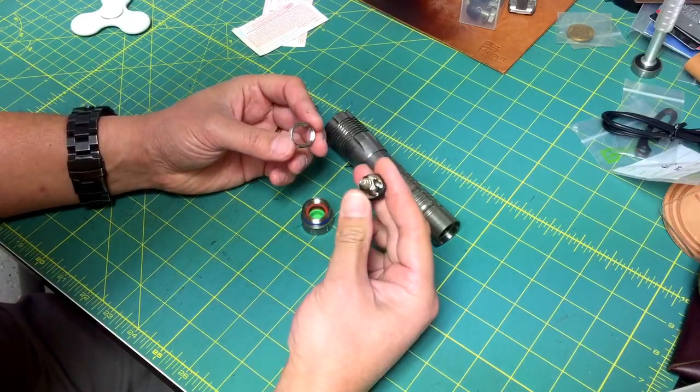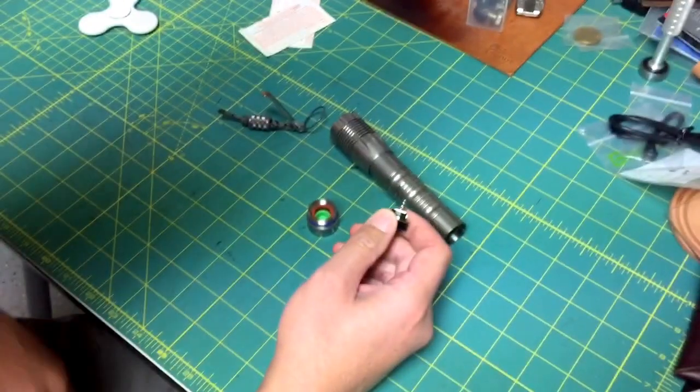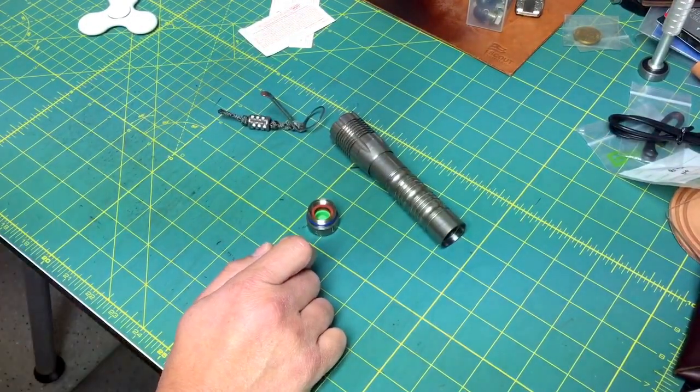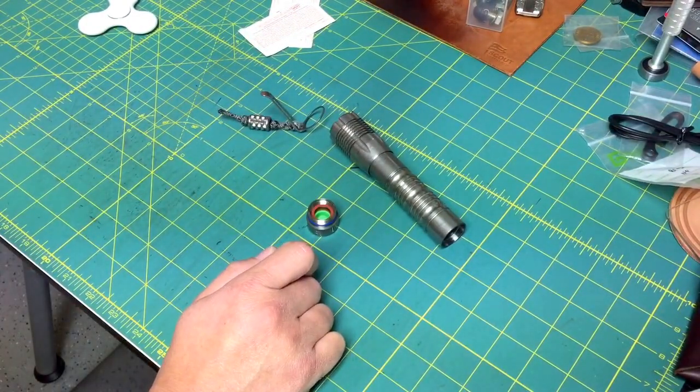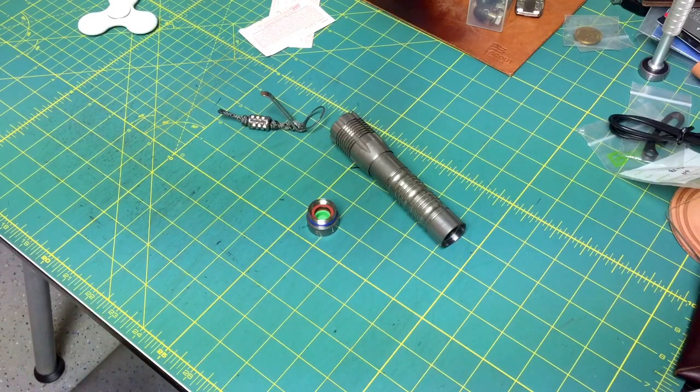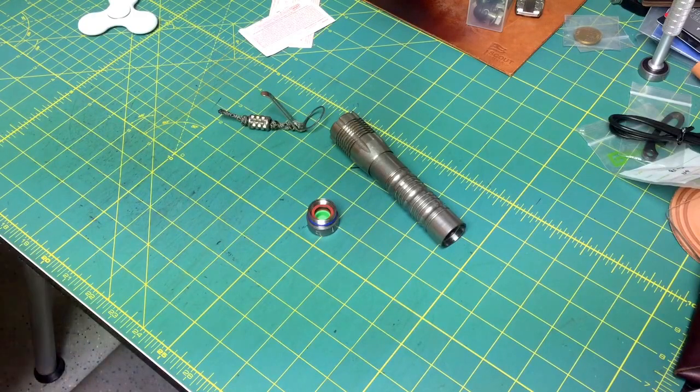This ring, the retaining ring, is separate from the switch. Whoa, I just dropped that on the floor. Where'd it go? Oh man. Oh, I got it. I'm back.